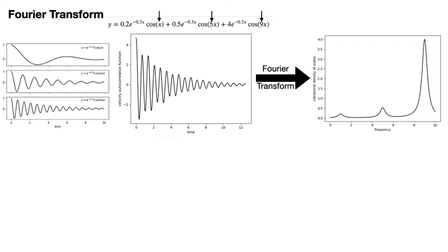If we were to take similar Fourier transforms of the autocorrelation functions that emerge from our MD simulations, we may therefore use them to identify the damped periodic motions that these systems undergo. In the rest of this video, we are thus going to learn how to calculate the Fourier transform of the velocity autocorrelation function in order to arrive at the so-called vibrational density of states.